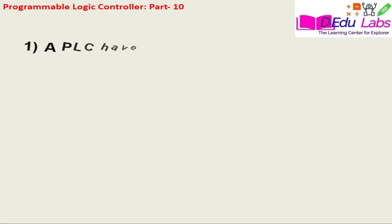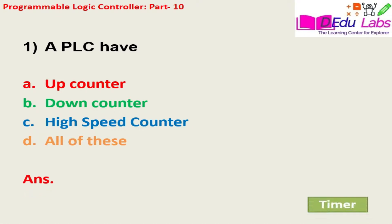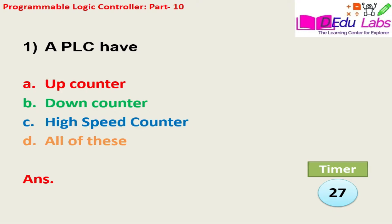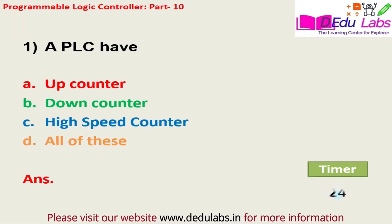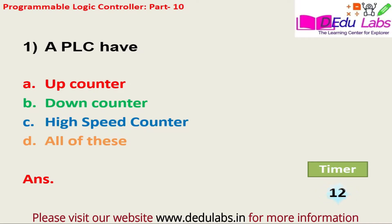Question number one: A PLC has — option A, up counter; option B, down counter; option C, high speed counter; option D, all of these. The answer is option D, that is all of these.